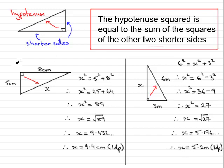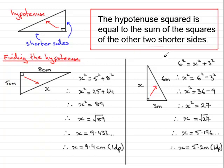So we have two examples here. The first example was about finding the hypotenuse. When you find the hypotenuse, x squared — the hypotenuse squared — equals the sum of squares of the other two shorter sides. In the second example, what we were doing was finding a shorter side, not the hypotenuse. Remember: the hypotenuse squared equals the sum of the squares of the two shorter sides. When finding a shorter side, x squared equals the hypotenuse squared minus the other shorter side squared.